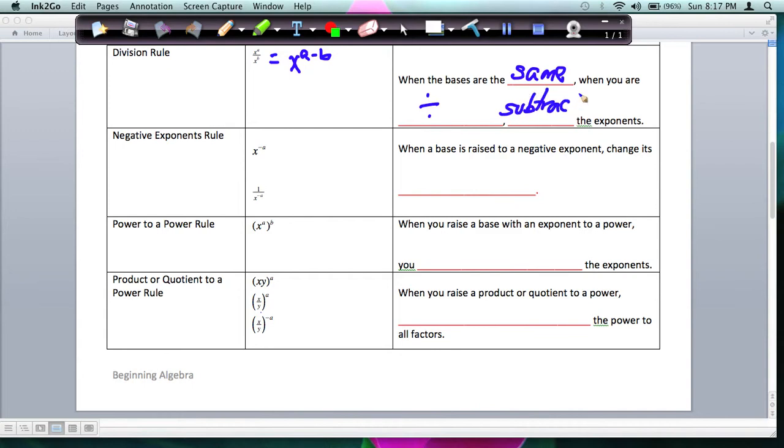So this is the property where I can show you why anything raised to zero power is one. Let me show you an example. If I have 5 to the third power over 5 to the third power, the division rule says these are the same base. I can subtract the exponents, so that would be 3 minus 3, which is zero. And anything divided by itself, so if I had 5 divided by 5, that would be 1, while 5 cubed divided by 5 cubed is also 1. So that's why anything to the zero power is 1.